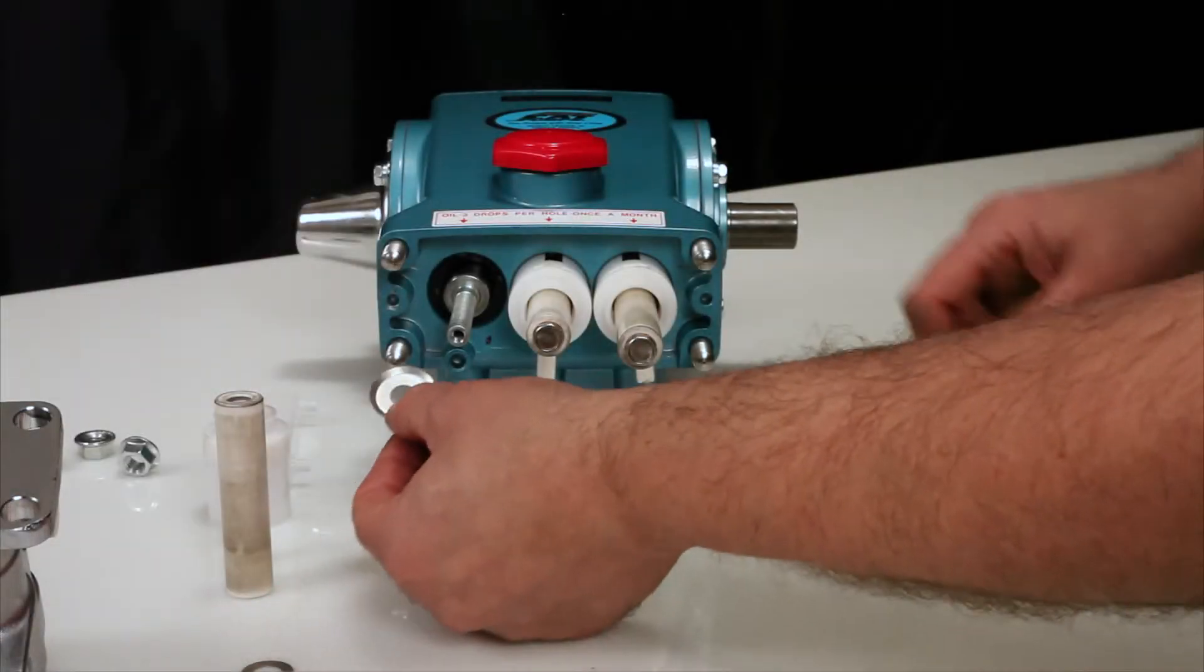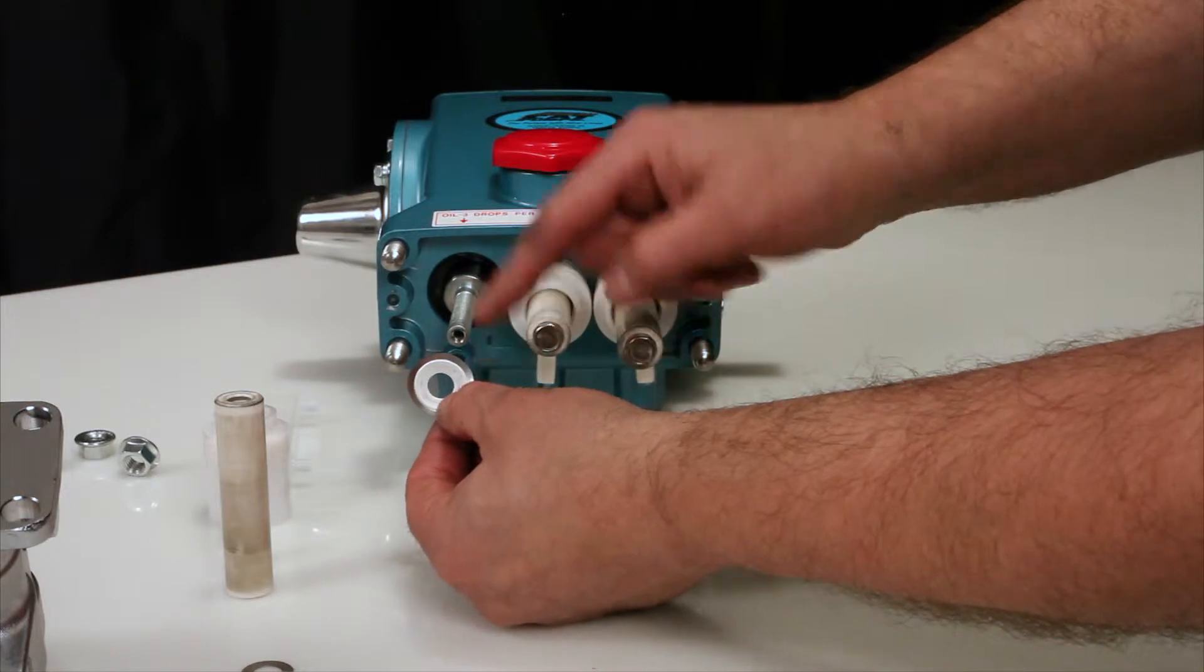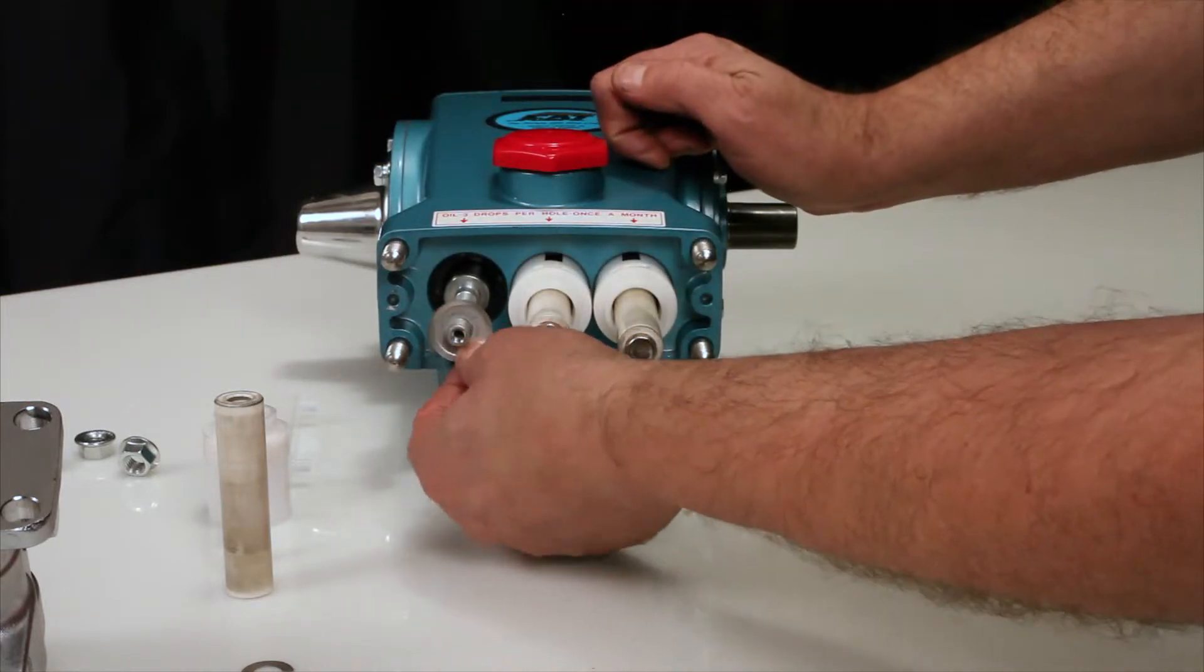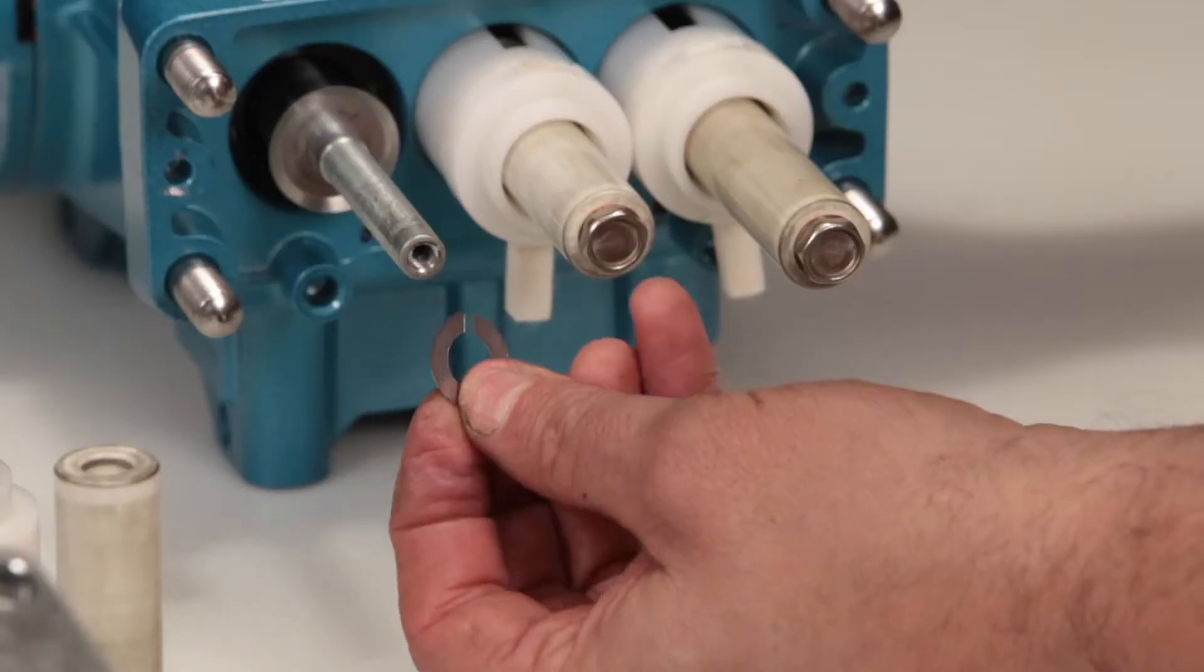To reassemble, install the barrier slinger with the dish side facing away from the crankcase. Next, install the keyhole washer. The slot can face in any direction.